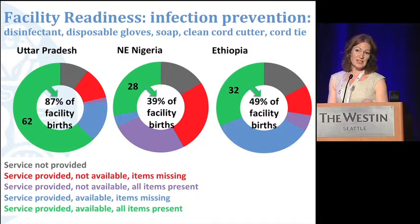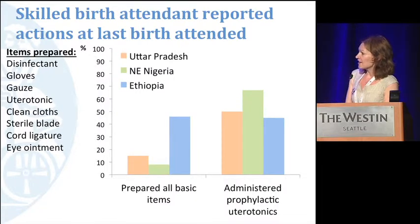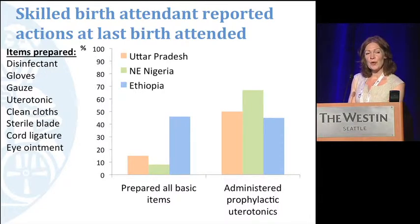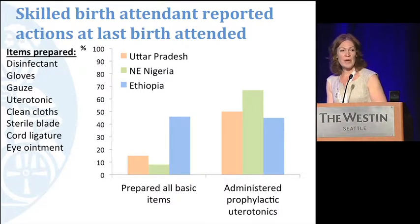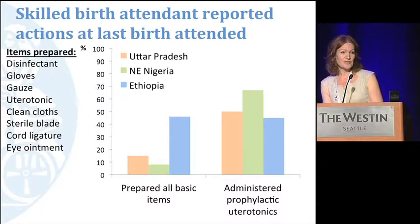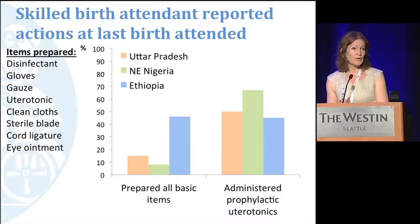Moving on to the skilled birth attendants: the percentage of skilled birth attendants who had been able to prepare a basic set of items for maternal and newborn care at their last delivery was 16% in Uttar Pradesh, 8% in northeast Nigeria, and far better in Ethiopia at 45%. We also asked about the actions they took during that birth — whether or not they administered a prophylactic uterotonic. Around half of the skilled birth attendants in Uttar Pradesh and Ethiopia said yes, and two-thirds in northeast Nigeria.